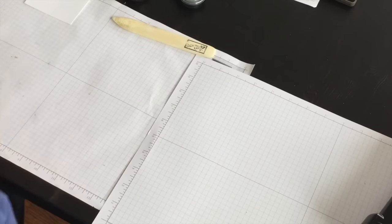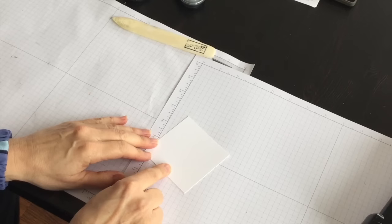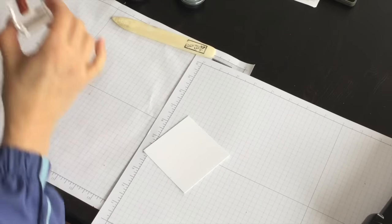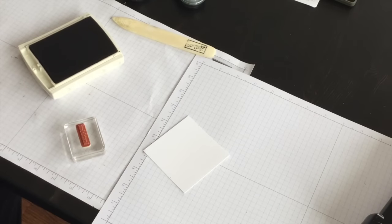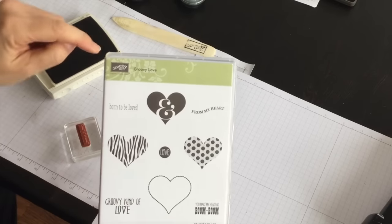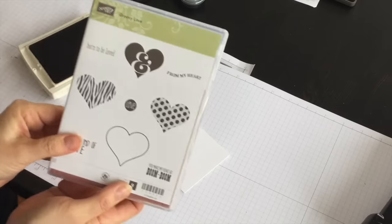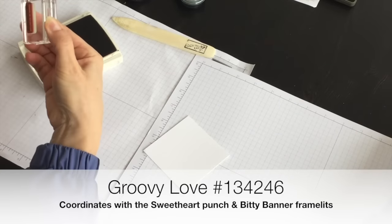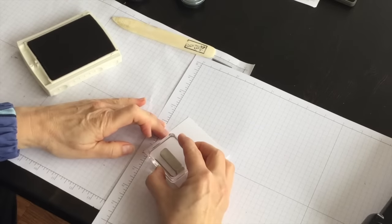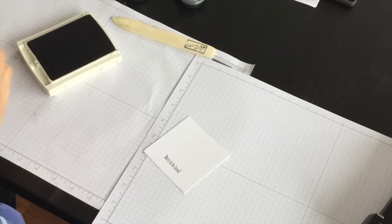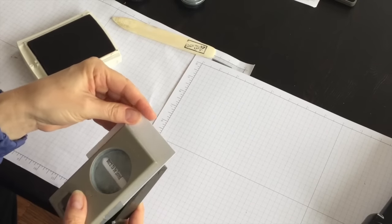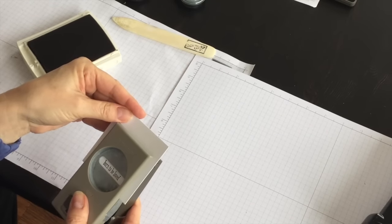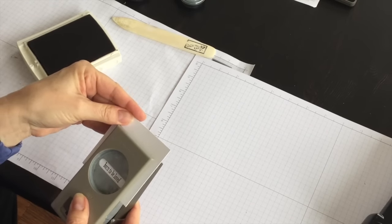Okay, now the next thing I want to do is stamp a phrase for the front of my card. So I've got a piece of scrap whisper white cardstock and for this phrase I'm going to use the groovy love stamp set where it says born to be loved, and I'm going to just stamp that down using my basic black and then I'm going to use my word window punch and punch that out.